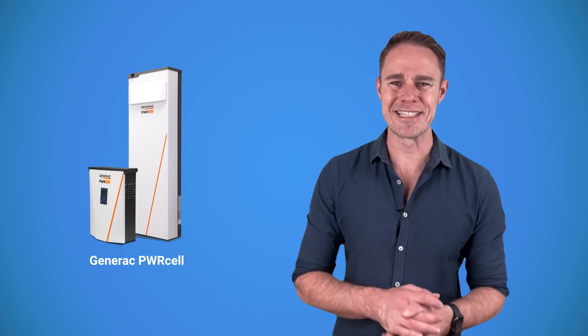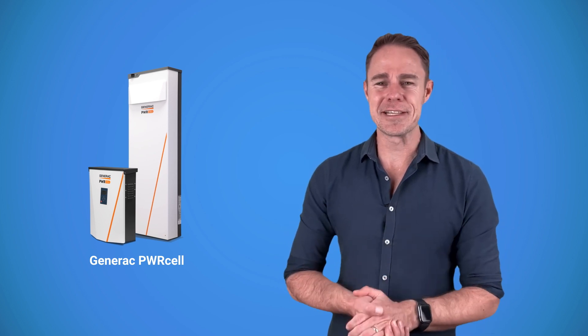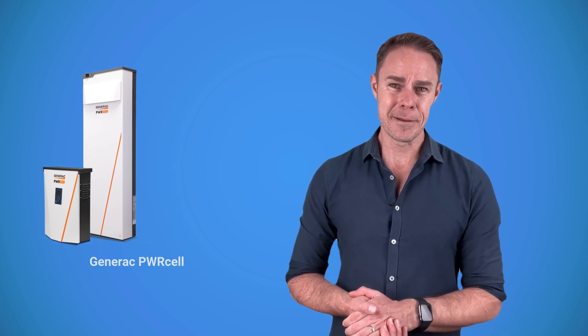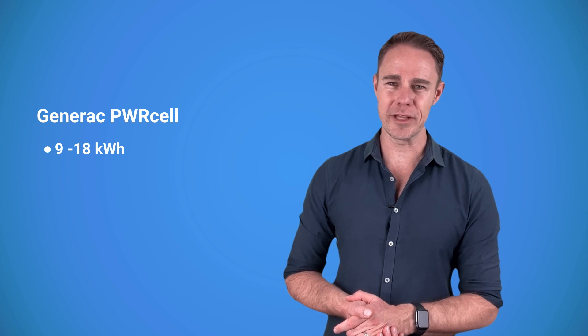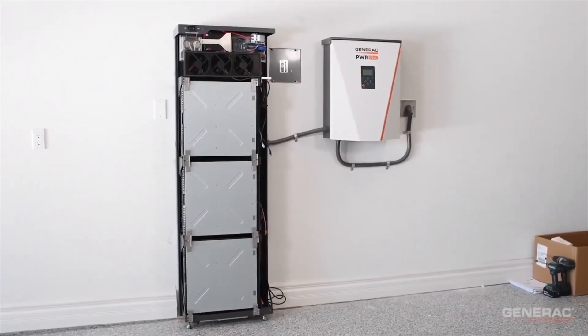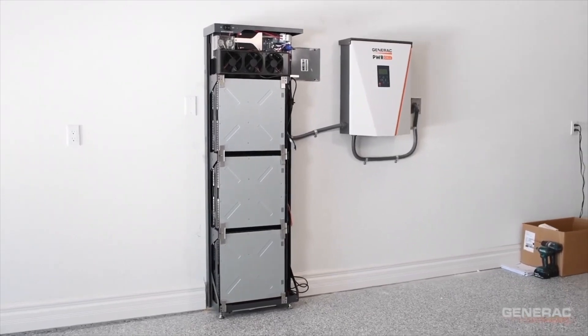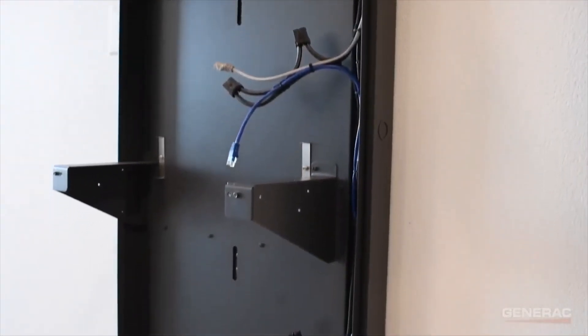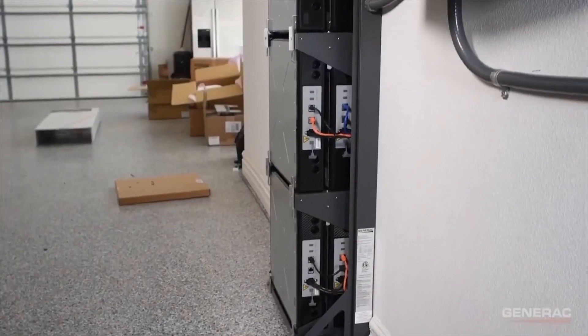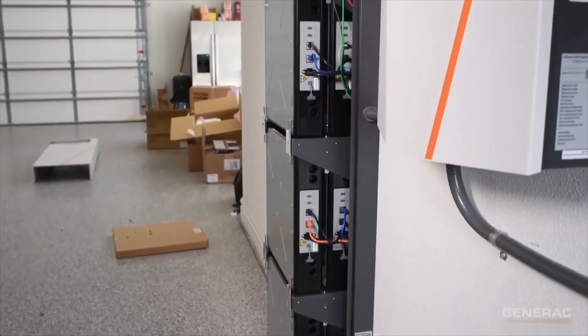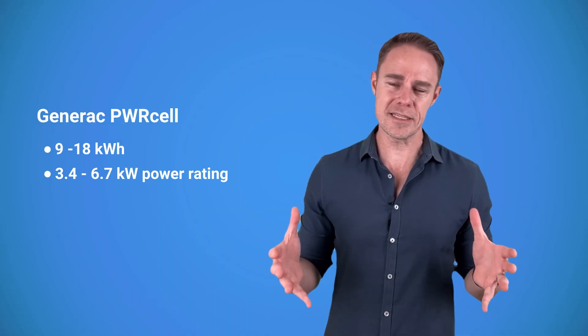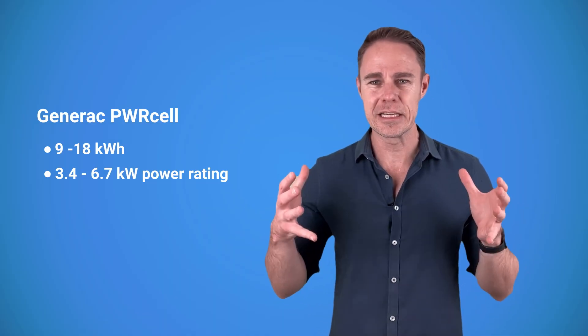Next, we have Generac PowerCell. Now, this system consists of a cabinet with three to six battery modules in it. The minimum capacity is nine kilowatt hours and each battery module increases it by three. You can get 18 kilowatt hour capacity with a single cabinet and the power ranges from 3.4 kilowatts to 6.7. Of course, depending on the number of battery modules. If you want, you can get two cabinets and increase the overall capacity to a maximum of 36 kilowatt hours.